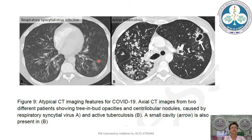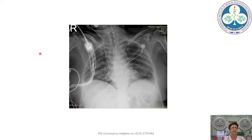Examples of atypical CT findings include perilobular opacities with cavitations (active tuberculosis) and findings from a respiratory syncytial virus infection — both show patterns that are not typical for COVID-19.